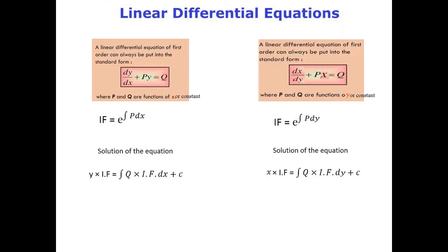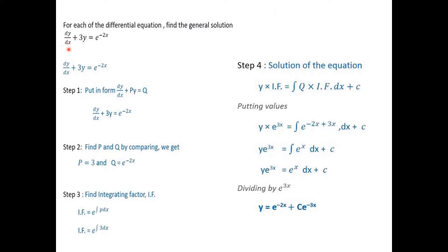Example: dy/dx + 3y = e^(−2x). Comparing with dy/dx + Py = Q, we identify P = 3 and Q = e^(−2x). The integrating factor is e^(∫3 dx) = e^(3x). The solution is y·e^(3x) = ∫e^(−2x)·e^(3x)·dx + C, which can then be evaluated easily.